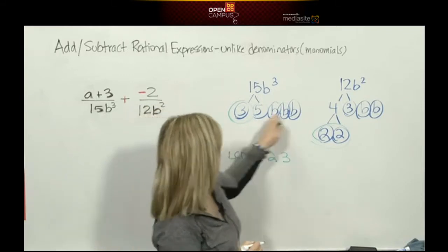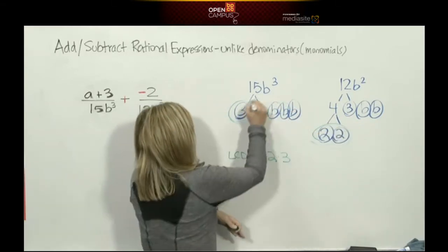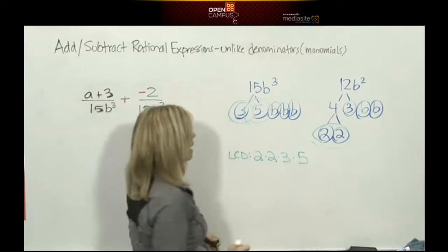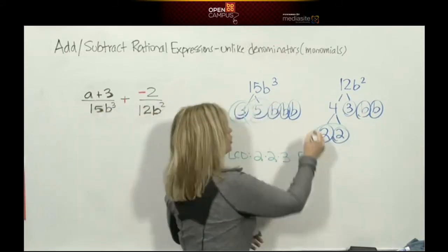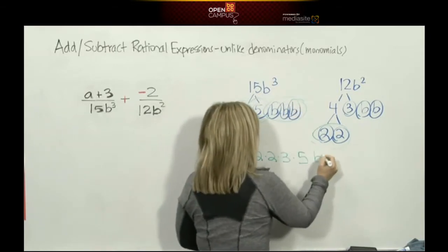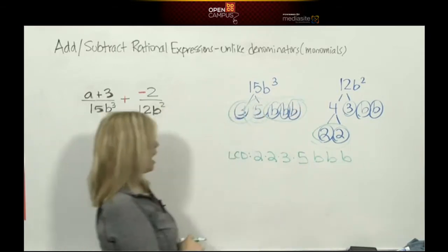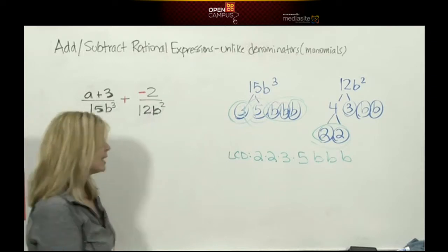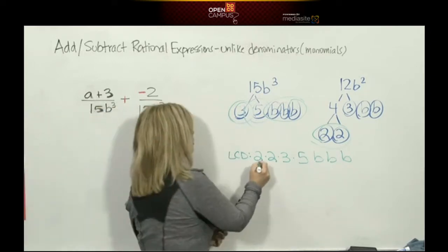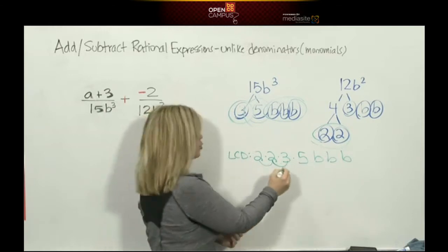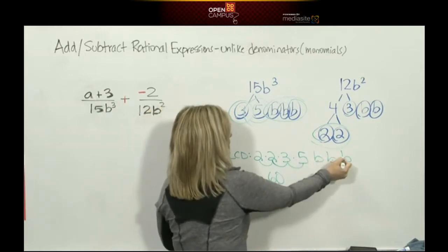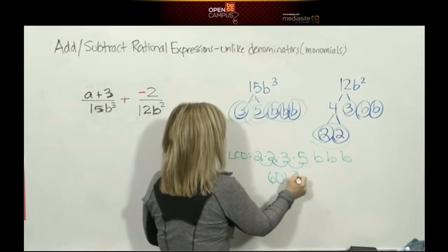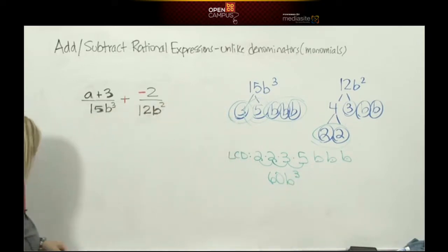Now I'll do my variables. 3 b's, 2 b's. Who has the most? 3 b's. We're going to multiply that out and that's going to give me my least common denominator. 2 times 2 is 4, 4 times 3 is 12, 12 times 5 is 60, b times b times b is b cubed. So now I know I'm going to make my denominators become 60b cubed.